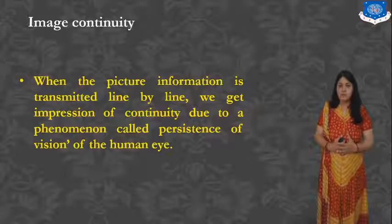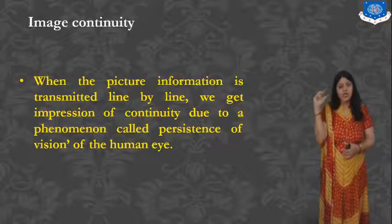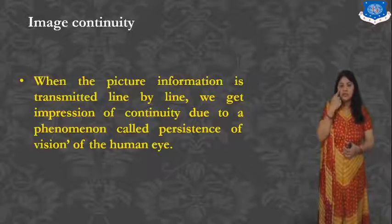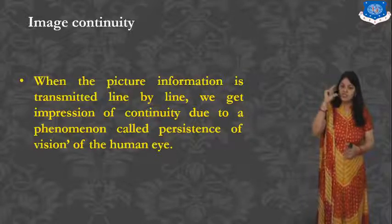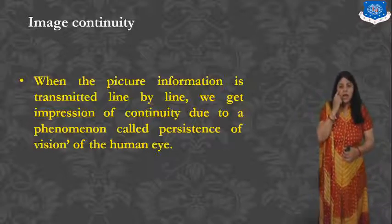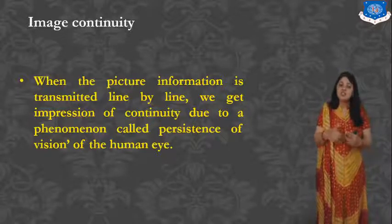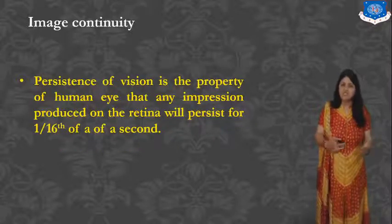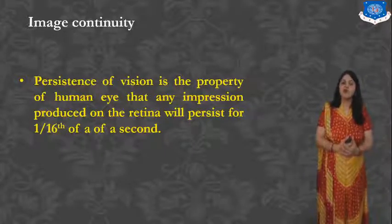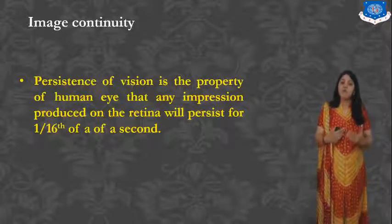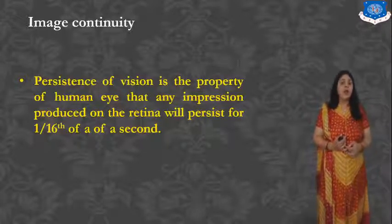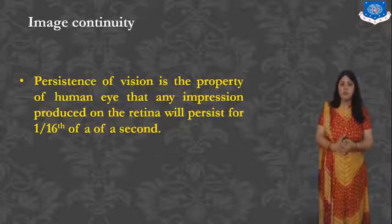What is the Persistence of the Eye? If you look at one Object for only a very small time, that Picture will not create an Impression on our Eye. But if the same thing is repeated a number of times, it will create some information on our Eye — this is known as the Persistence of Vision. The Persistence of Vision is the property of the Human Eye that any Impression produced on the Retina will persist for 1/16th of a Second.